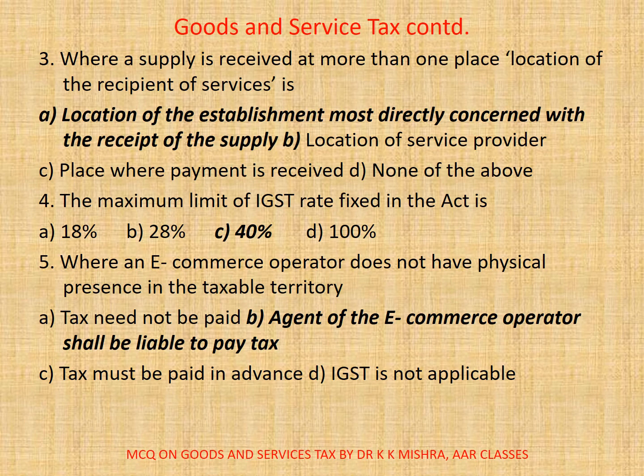Question 3: Where supply is received at more than one place, the location of the recipient of services is — A. location of the establishment most directly concerned with the receipt of the supply, B. location of service provider, C. place where payment is received, D. none of the above.